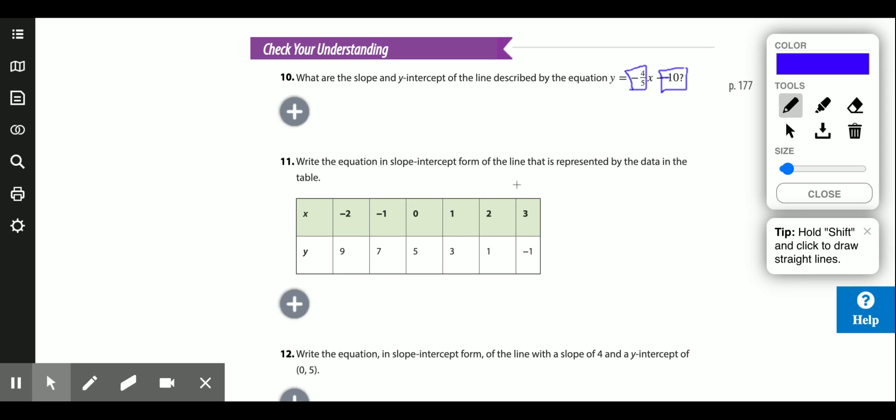Write the equation in slope-intercept form of the line that is represented by the data of the table. Well, let's find the slope first. Let's subtract our y's over our x's. Remember the slope is rise over run, change in y over change in x. Well, 9 minus 7 is 2. That's our change in y. Over negative 2 minus negative 1. Well, that's negative 2 plus 1, that's negative 1. 2 over negative 1 is negative 2. Our slope is negative 2.